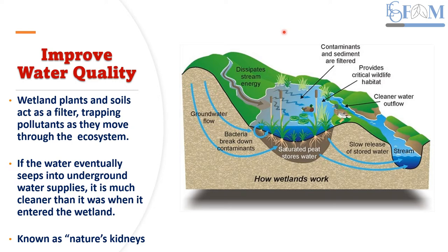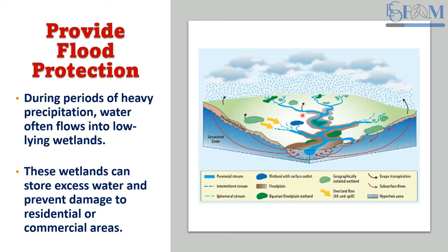If water eventually seeps into the ground as underground water supply, it is much cleaner than when it entered the wetland. As illustrated, a stream of polluted water enters the wetland, which acts as a buffer — removing sediments, pollutants, pesticides, and fertilizers through various physical, chemical, and biological processes — and lets the outlet water out cleaner compared to the inlet water. That is why wetlands are called nature's kidney.